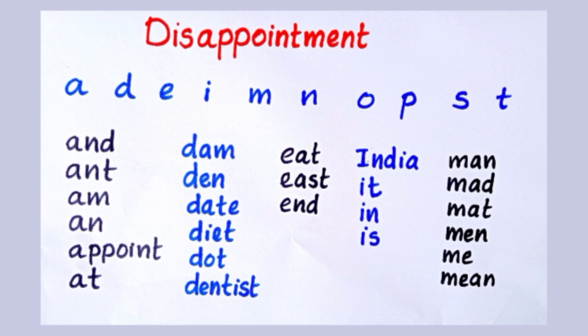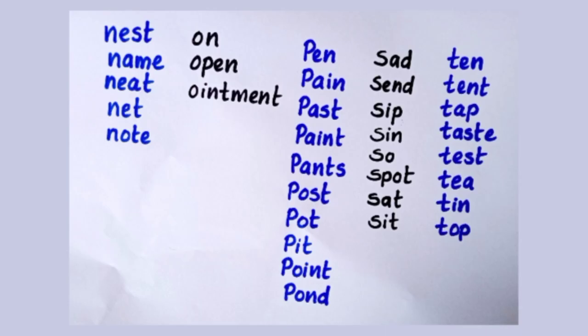We can make many words from the word 'disappointment': India, it, in, is, man, mad, men, me, mean, nest, name, need, net, note, on, open, ointment, pen, paint, past, pants, post, port, pit, point, pond.